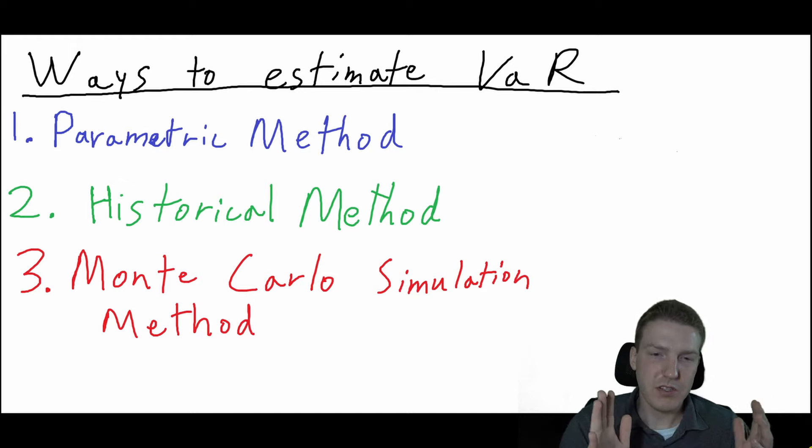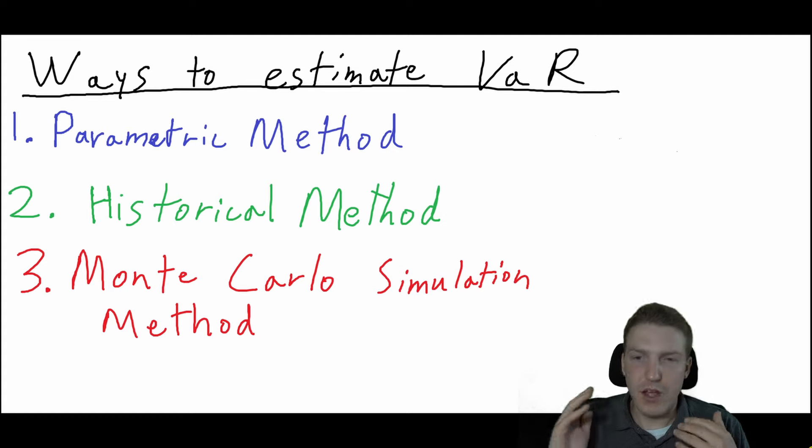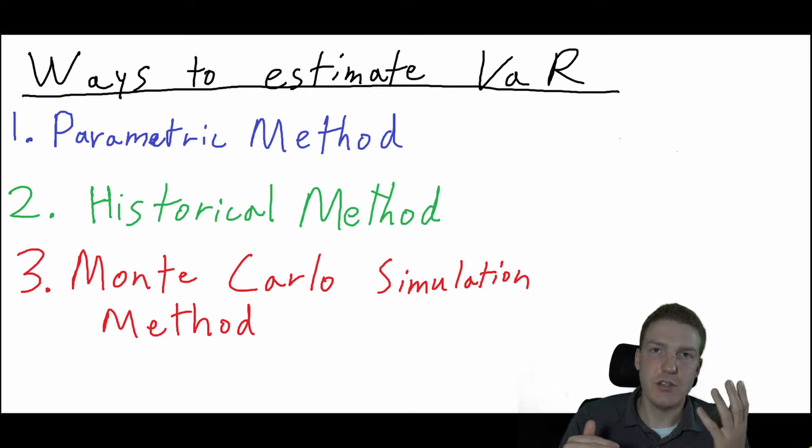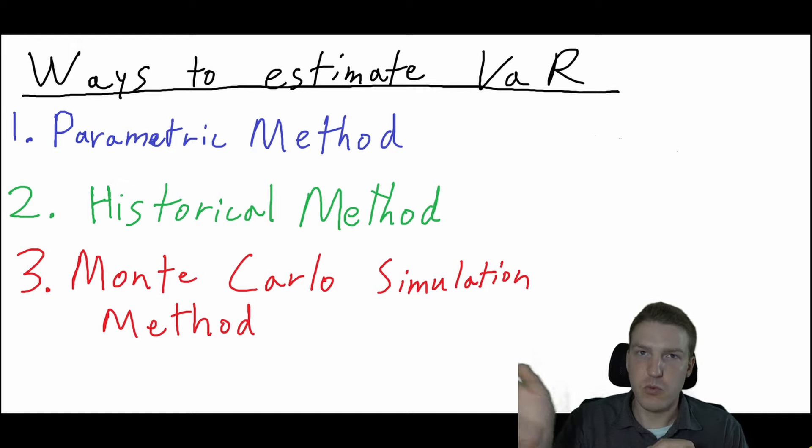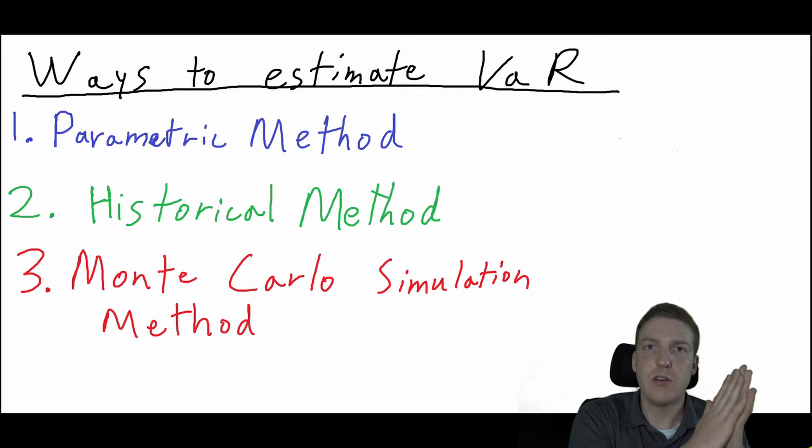The third way to calculate VaR is using a Monte Carlo simulation. You define your parameters—mean, standard deviation, and return distribution. Then you say, 'I'm going to do 1,000 simulations using my computer.' After these 1,000 simulations, each gives a return expectation, and you find the specific percentile return that you specified in your VaR assumptions. So there you have it! If you enjoyed this video, please subscribe to the channel and drop a like.